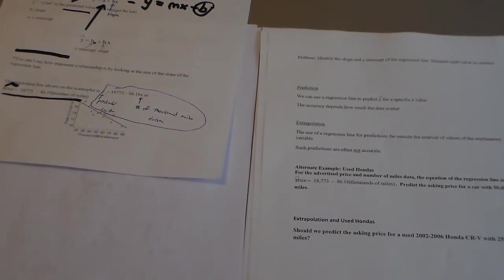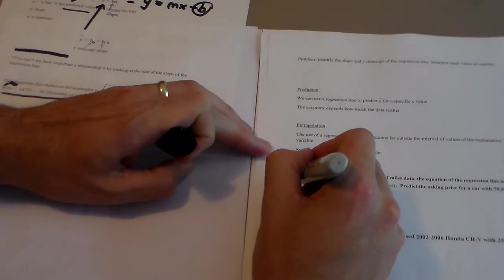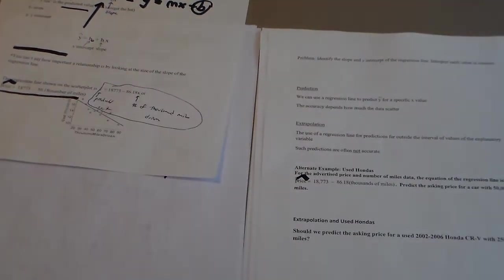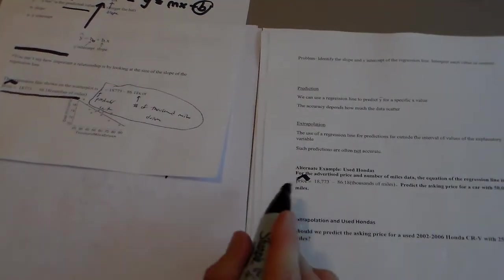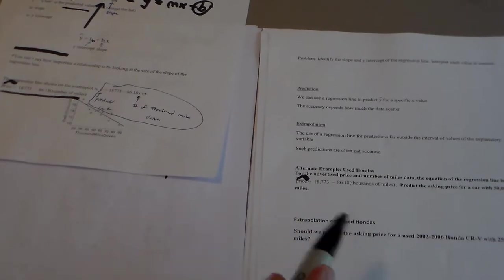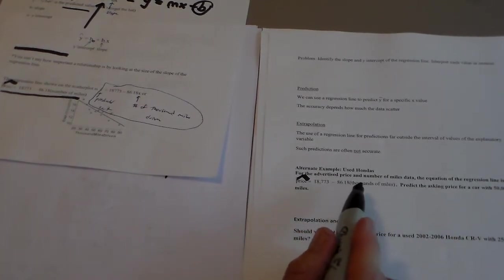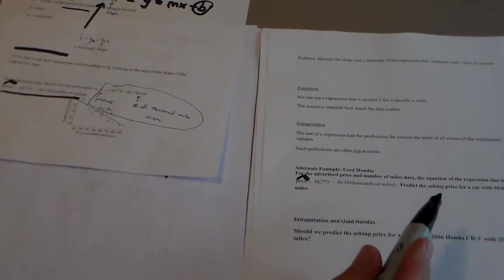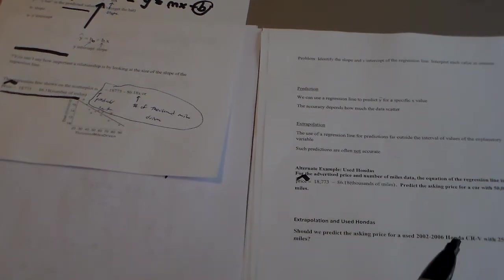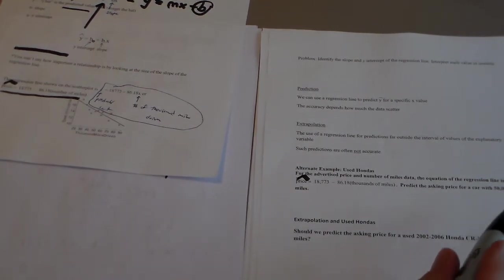Please take the time, take the second it takes to write the true thing. Predicted price equals 18,773 minus 86.8 times the thousands of miles. So predict the asking price for a car with 50,000 miles.